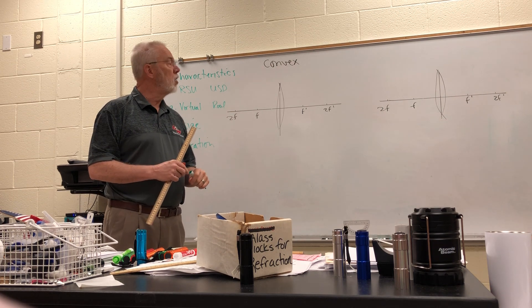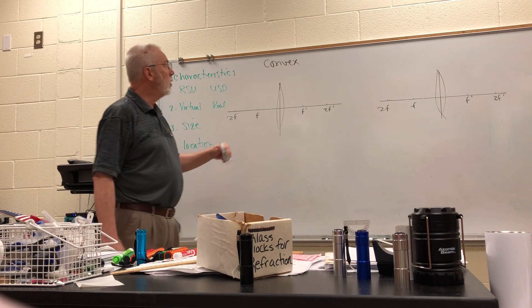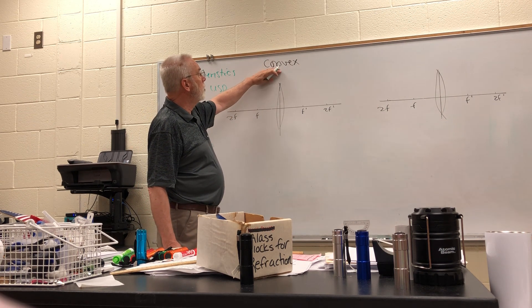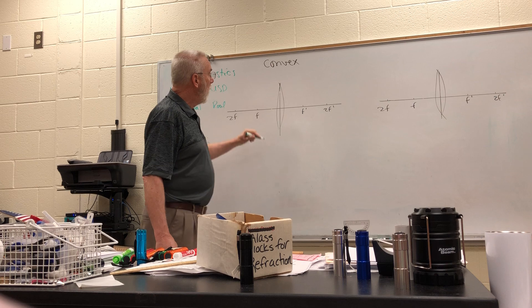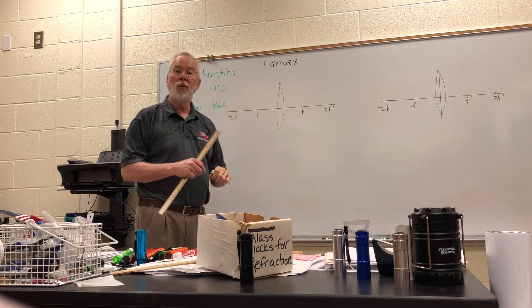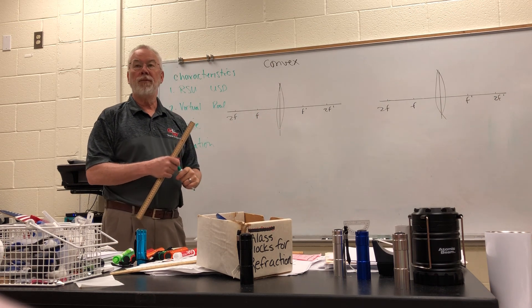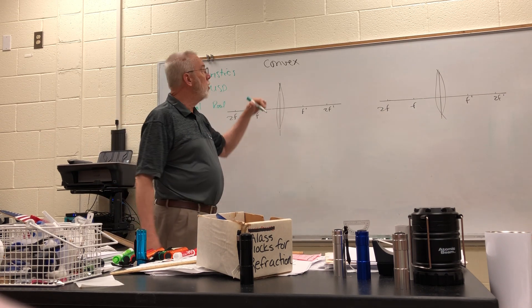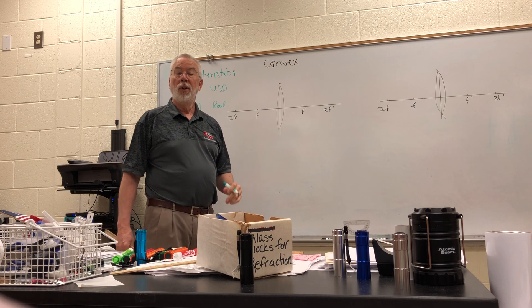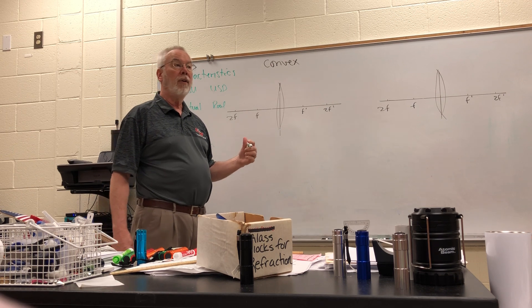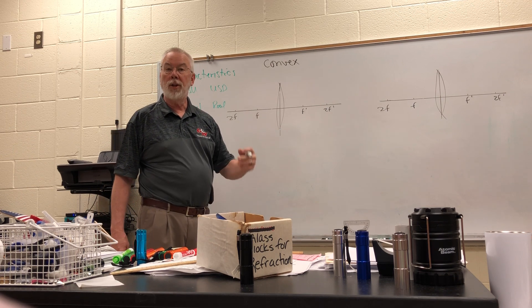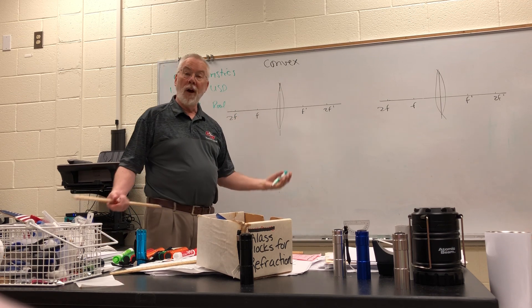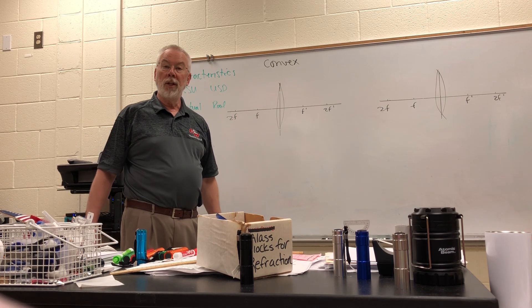So let's get started with the first kind of lens. The first kind of lens is called a convex lens and it has this particular shape. There are several places that these lenses are found. They're found, for example, in your eye. The lens that's in your eye is convex. The lens that you have in most telescopes or binoculars are convex and a magnifying glass is a convex lens.